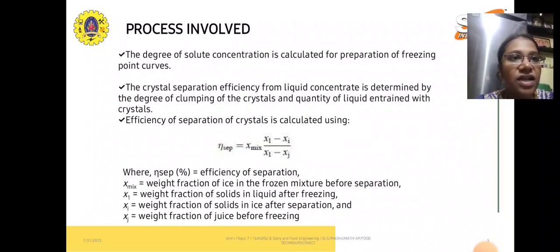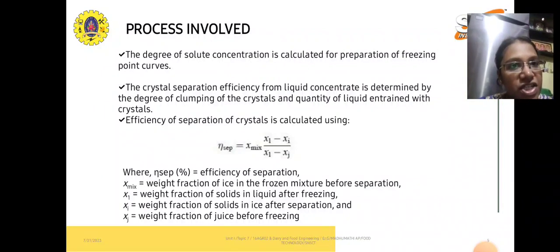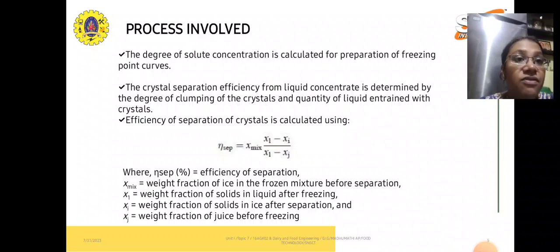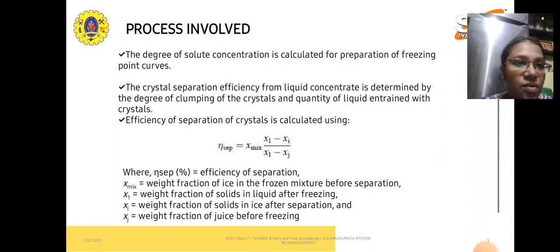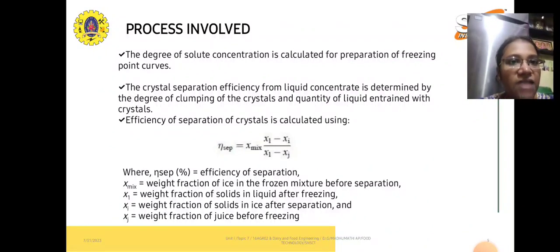The degree of solute concentration is calculated using the freezing point curves. The efficiency of separation is calculated as: the weight fraction of ice in the frozen mixture before separation, multiplied by the weight fraction of solids after freezing minus the weight fraction of solids in ice after separation, divided by the weight fraction of solids after freezing minus the weight fraction of juice before freezing.